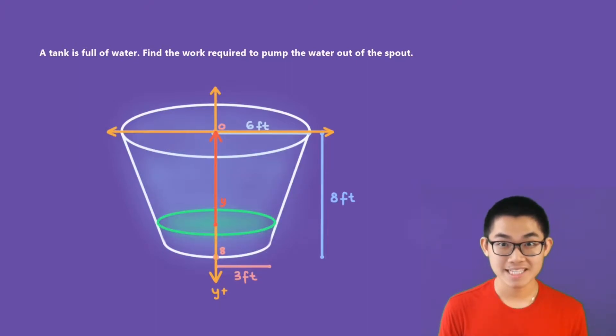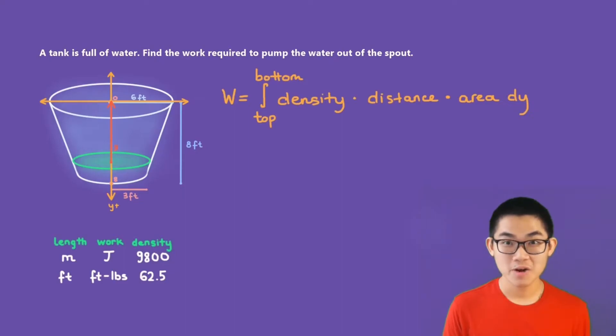To empty this tank, all we have to do is move every layer of water like this one, so there are many layers of water here. So we're going to move each layer of water to the top of the tank. And the distance from the origin to our layer of water is called y. To calculate the work, all you have to do is use this formula. W, or the work, is equal to the integral from the top to the bottom of density times distance times area. So what is the top and what's the bottom? Well, as mentioned before, we want to empty this tank from 0 to 8. So the bottom will be 8, and the top will be 0.